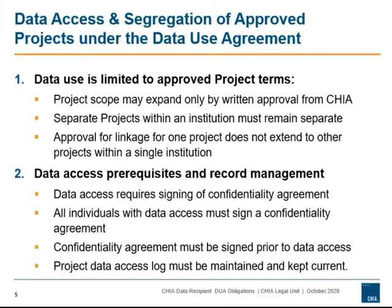Under the CHIA data use agreement, each approved project must be kept separate from any other approved CHIA projects and not shared or intermingled. CHIA data must only be used for the approved project and not for any other project without prior approval by CHIA. Each project may link CHIA data, if at all, only to the data sources which are specifically described and identified in the approved CHIA data application. The principal investigator of each approved CHIA data application must also ensure that no individual receives access to CHIA data without first completing the CHIA confidentiality agreement in the form provided with the data use agreement.